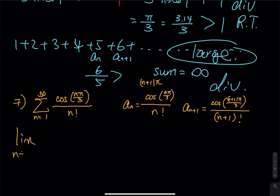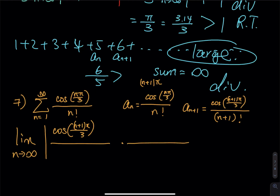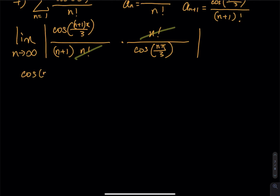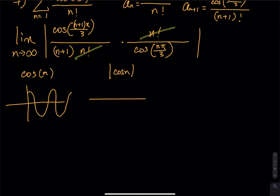Set up the ratio: limit as n approaches infinity of a_{n+1} divided by a_n. That is cosine((n+1)*pi/3) divided by (n+1) factorial, times the reciprocal n factorial divided by cosine(n*pi/3). Now, (n+1) factorial equals (n+1) times n factorial, so the n factorials cancel. The reason I picked this problem is because of the cosine. The graph of cosine of n looks like a wave oscillating between -1 and 1.